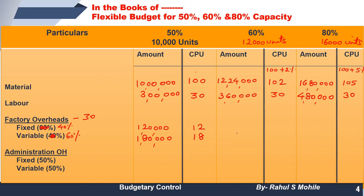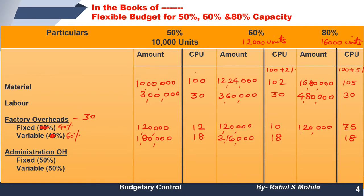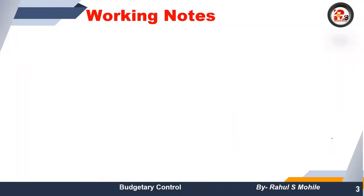For fixed costs, no tension — the amount stays the same: 1,20,000 at 60% and 1,20,000 at 80% as well. Dividing 1,20,000 by 12,000 gives CPU of 10; dividing by 16,000 gives CPU of 7.5. Variable always stays same per unit — 18. So 18 multiplied by 12,000 = 2,16,000, and 18 multiplied by 16,000 = 2,88,000. Fixed expenses remain constant in amount; variable expenses remain constant per unit.